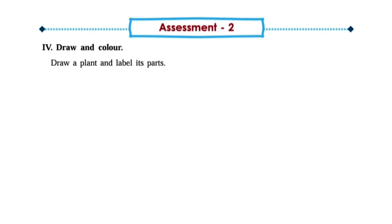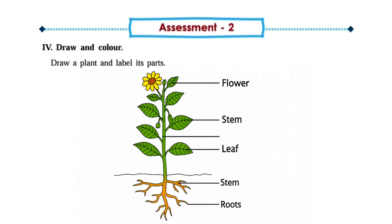Next: Draw and color. Draw a plant and label the parts. Here students have to draw a plant and label the parts of a plant. Here I have given a plant and its parts. So you can draw like that.